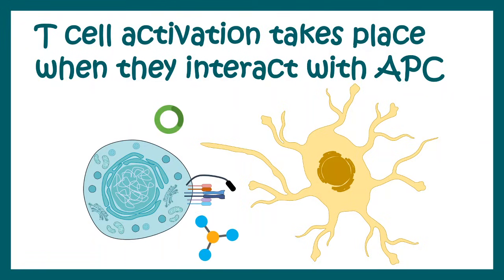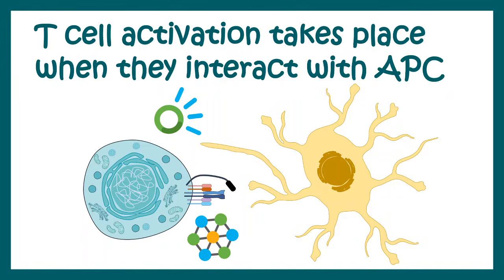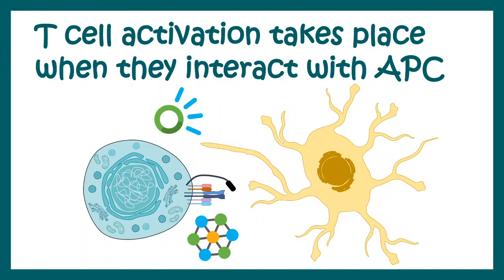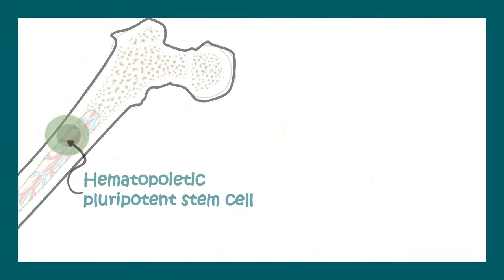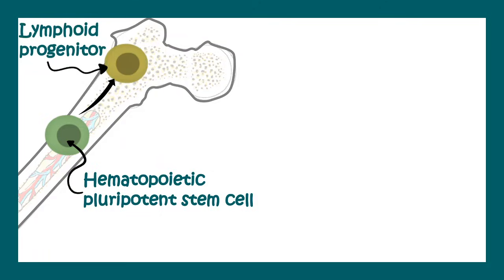Before understanding the cellular and molecular events in T cell activation, let us begin from the basics. T cell develops in the bone marrow and it all starts from the hematopoietic pluripotent stem cell. From there, it develops into a lymphoid progenitor.